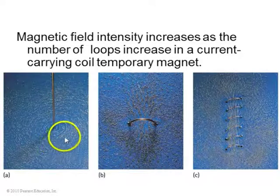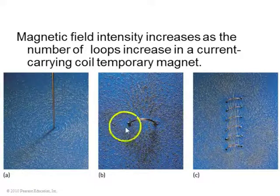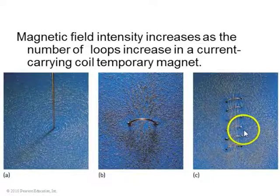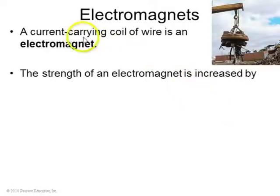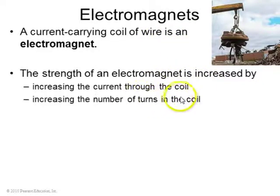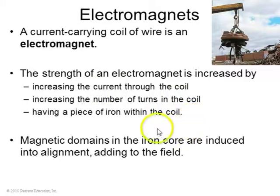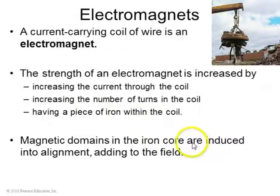You can see these magnetic fields if you sprinkle iron filings around current-carrying wires. If you have a current-carrying coil of wire, or a spiral of wire, that's called an electromagnet — it makes a very strong magnetic field. The magnetic field strength is increased by the amount of current, the number of turns in the coil, and it can also be increased by putting a piece of iron within the coil. The magnetic domains in the iron core will then align with the magnetic field you produce with the electromagnet and increase the strength.